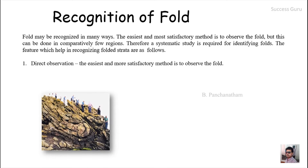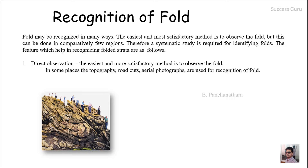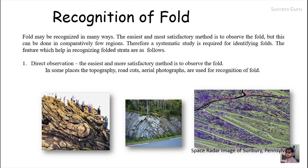The first method is direct observation — the easiest and most satisfactory method is to observe the fold in the field itself. This works when soil cover is minimal, there is no vegetation, and the surface is very steep. Possible locations include the Himalayas, the Alps, and other fold mountains. You can also use topography, road cuts, aerial photographs, or radar images to recognize folds.